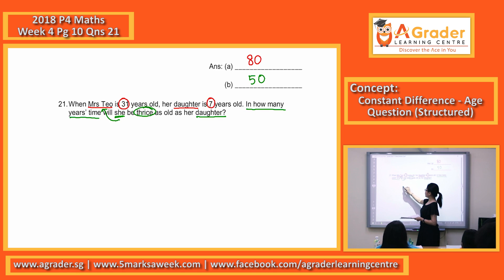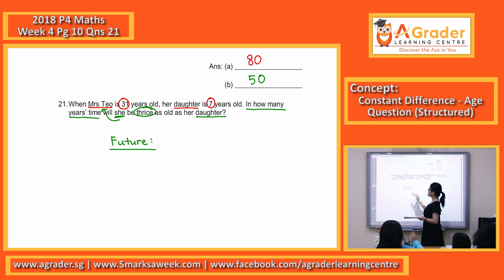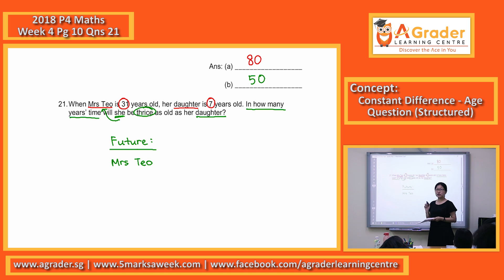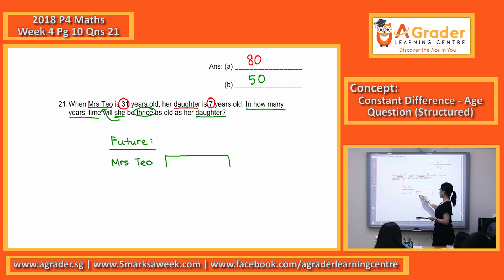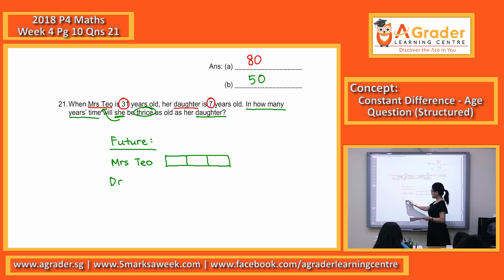Okay, looking at the future, for Mrs. Teo, how many units should she be? Three. So we draw three units. And then for the daughter, how many units? One.